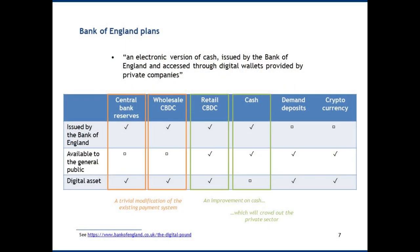The Bank of England plans are known as the 'digital pound,' which demonstrates a slight incoherency — since most of us already think of the pound as a digital currency for most transactions. The Bank of England describes it as an 'electronic version of cash issued by the Bank of England, accessed through digital wallets provided by private companies.' This table on screen tries to compare different asset types: central bank reserves, wholesale and retail CBDC models, cash, demand deposits, and cryptocurrency.